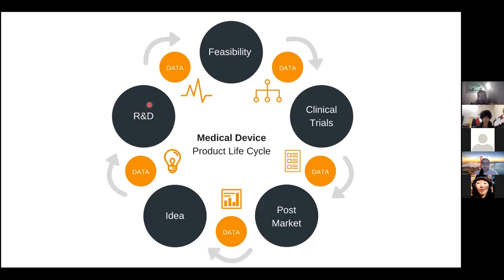Once you have a small prototype, you want to gather some data. You have to put it on people — does it do what we say it's supposed to do? Can we measure heart rate? Can we measure blood pressure? Can we predict heart attacks? So you kind of go through the cycle of device testing. If it doesn't work, go back into R&D. If it doesn't work again, go back into idea. You iteratively loop from phase to phase. Once you get to something that's working, you then have to do what's called clinical trials.